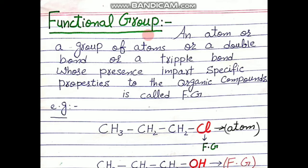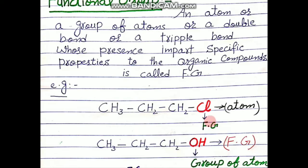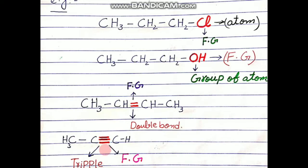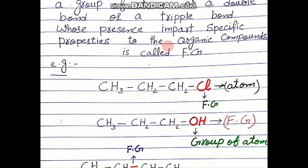Basically, a functional group is an atom, group of atoms, a double bond, or a triple bond whose presence imparts specific properties to organic compounds.